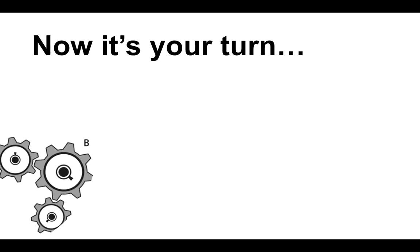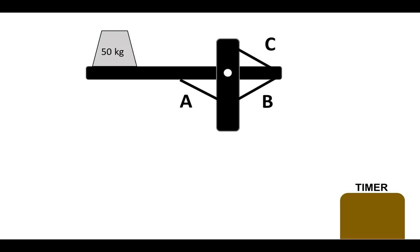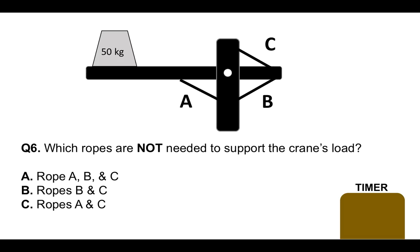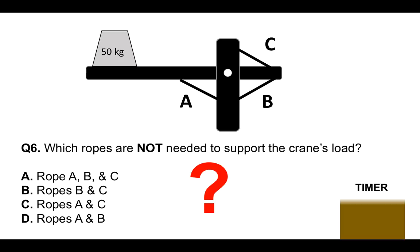Please post your answer in the comments section below for marking. This is question number six. Read this carefully: which ropes are NOT needed to support the crane's load? Is it A — ropes A, B and C; B — ropes B and C; C — ropes A and C; or D — ropes A and B? Put your answer in the comments section below. If you need more time, please pause the video — it's important to get it correct.